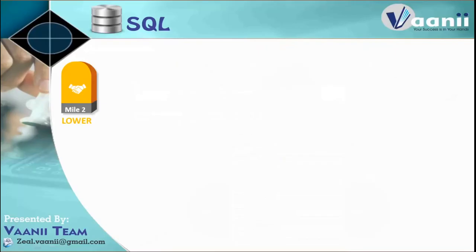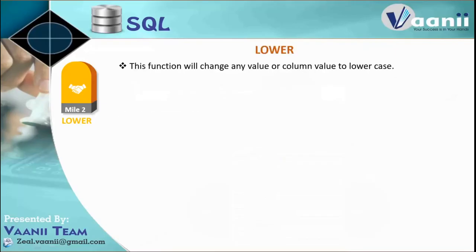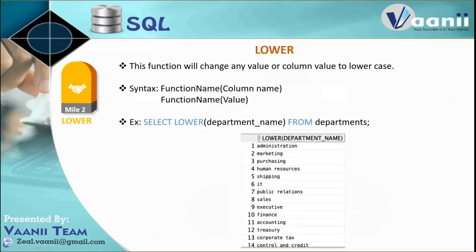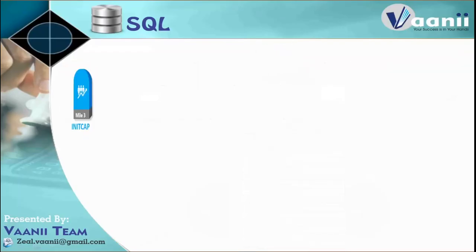Now let's talk about the LOWER function. Its name itself is very clear — it is going to change any value or character into lowercase. The syntax is the same as UPPER: just the function name followed by the column name. When you apply LOWER on a column, it will show all values as lowercase. That's the LOWER function.